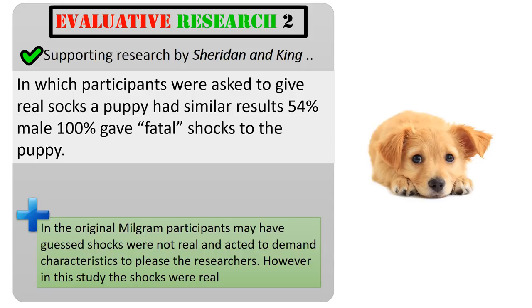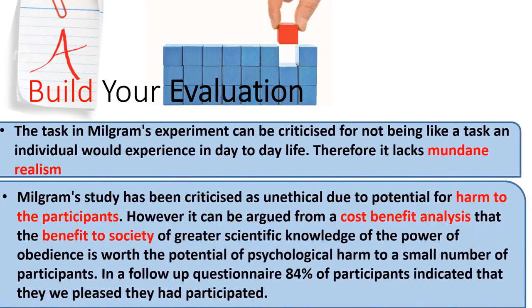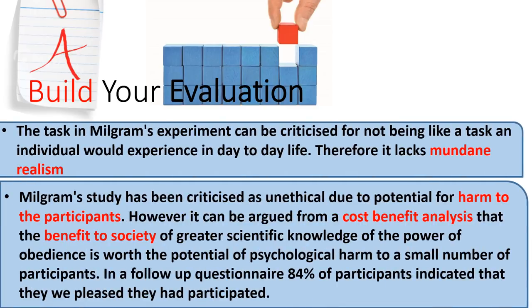100% of female participants gave fatal shocks to the puppy. So this research shows that even when shocks are real, participants will still give extreme shocks. We can also note that 54% of male participants gave extreme shocks compared to 100% of females. Since Milgram's original research only included males, you might criticise his research for containing gender bias — we don't know if his results would have been different had he included females, but Sheridan and King's research hints that obedience would actually have been higher for females.